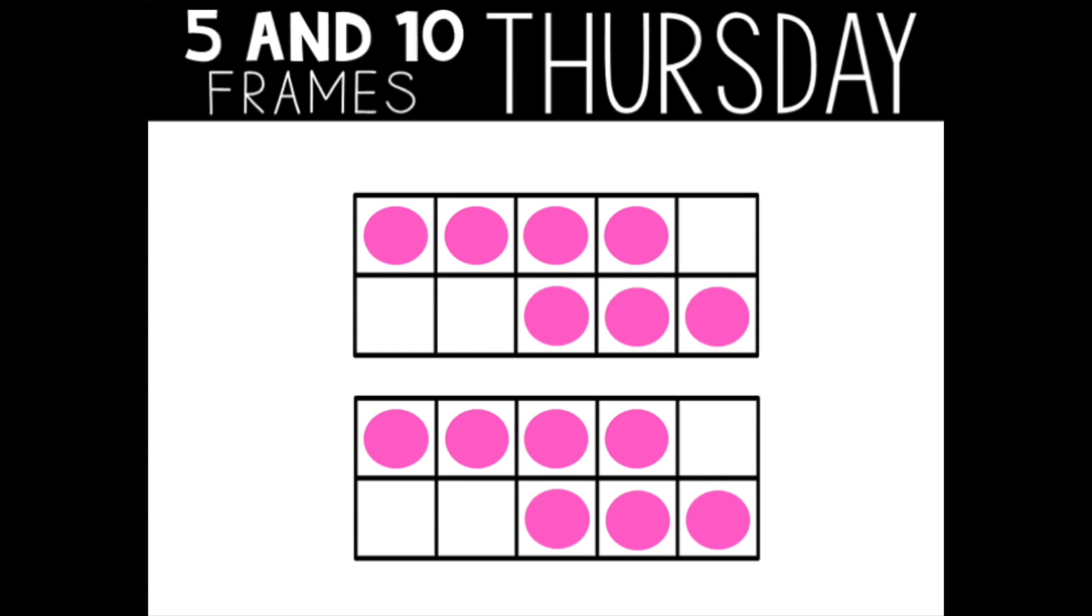Here's what I did. I noticed there are three dots missing in the top 10-frame and in the bottom 10-frame. One idea is to use my doubles strategy. If there are seven in the top and seven in the bottom, there are 14 total.